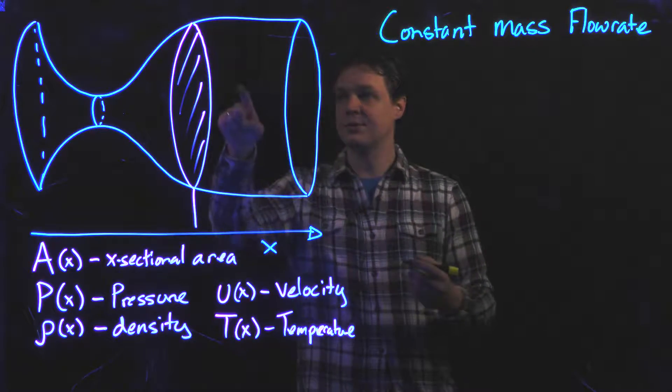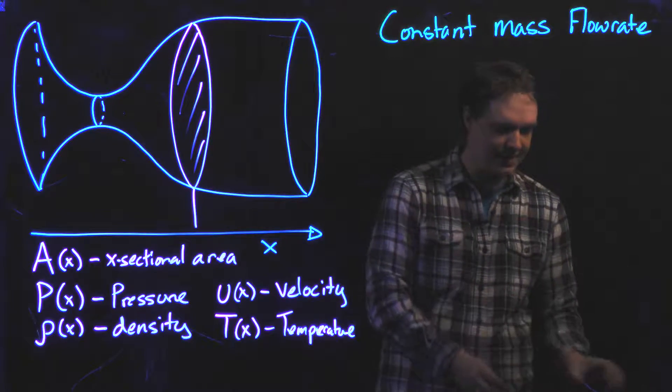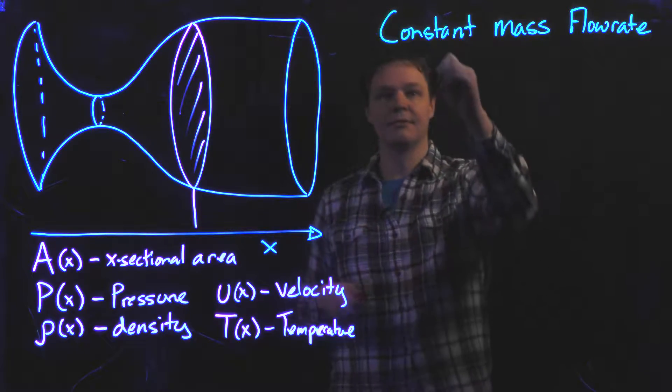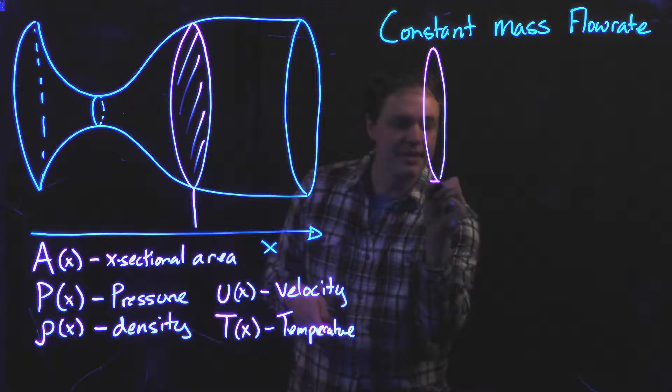To do that, what we're going to do is we're going to look at this cross-section right here. I'm going to take this cross-section, I'm going to redraw it, but then I'm going to give it some thickness.